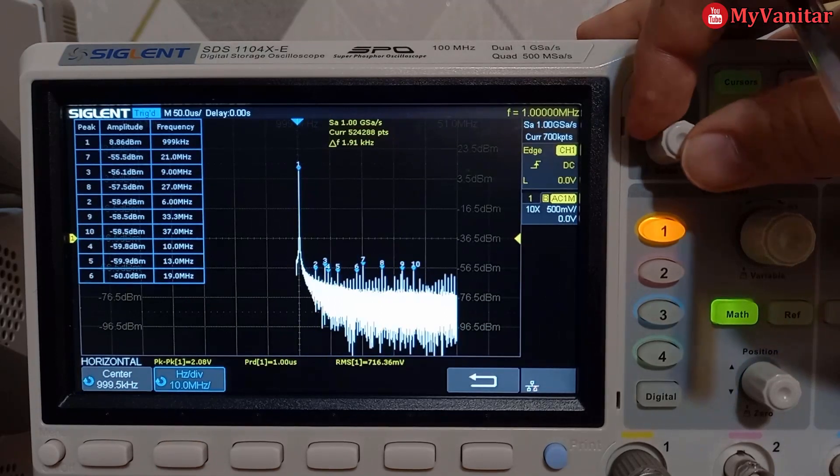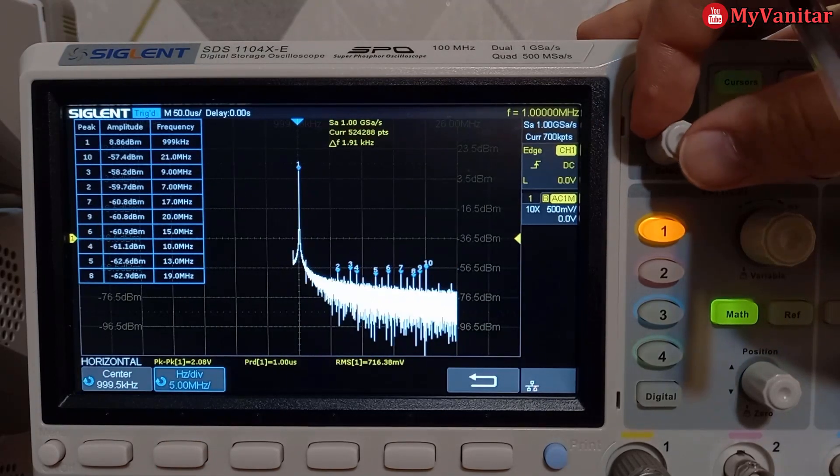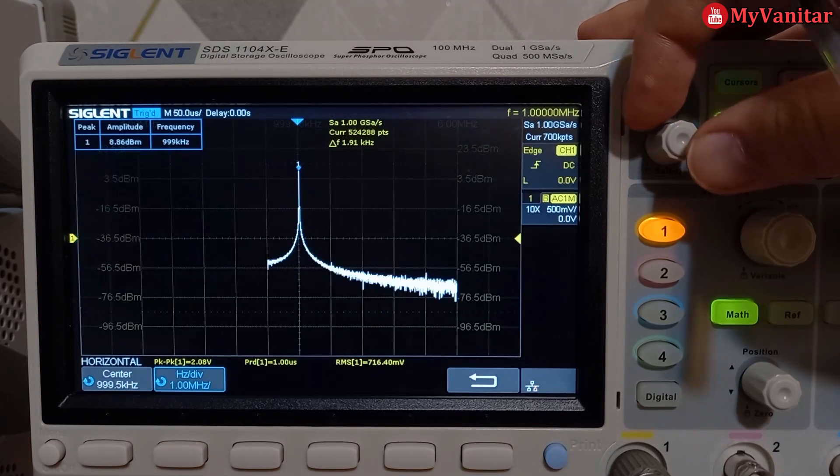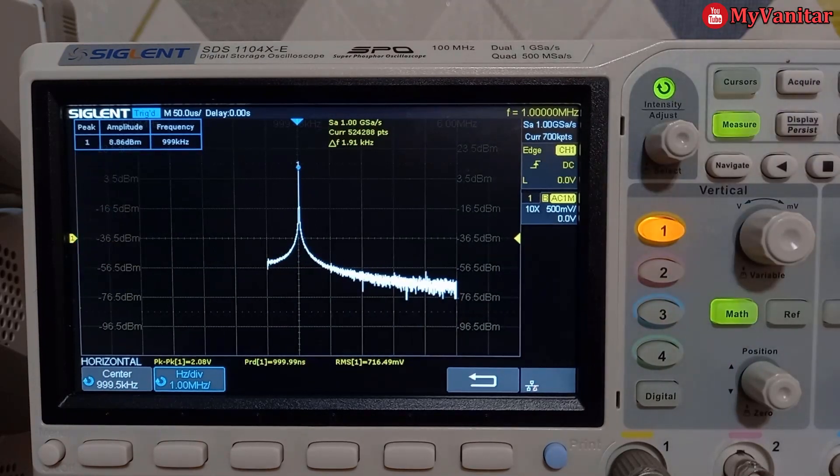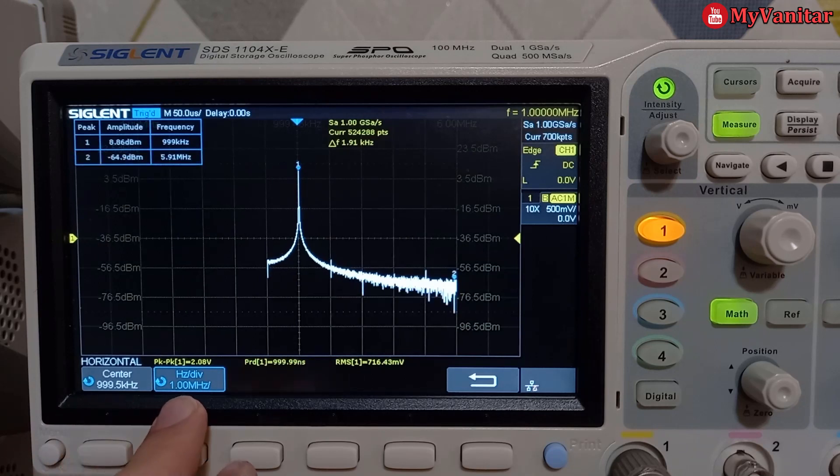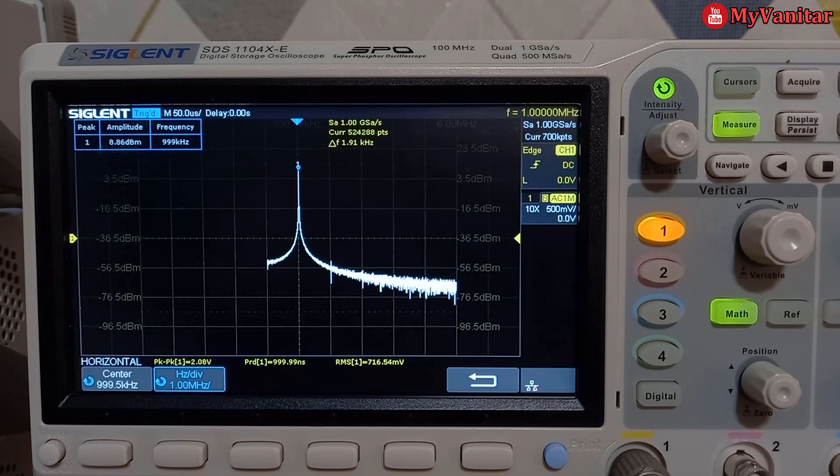Change this to something lower. There we go. The center frequency is 1 megahertz and 1 megahertz per division. And this is the major peak of this sine wave signal.